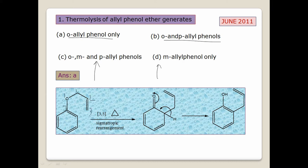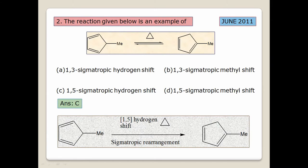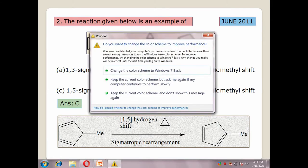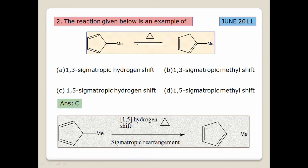Next, question number two: 'The reaction given below is an example of' — four answers are provided: 1,3-sigmatropic hydrogen shift; 1,3-sigmatropic methyl shift; 1,5-sigmatropic hydrogen shift; 1,5-sigmatropic methyl shift. Remember the selection rules: 1,5-sigmatropic shift is generally thermally allowed; 1,3-sigmatropic shift is photochemically allowed. In a 1,3-shift, 4 electrons are present; in a 1,5-shift, 6 electrons are present — a 6-electron system is thermally allowed. So we eliminate A and B.